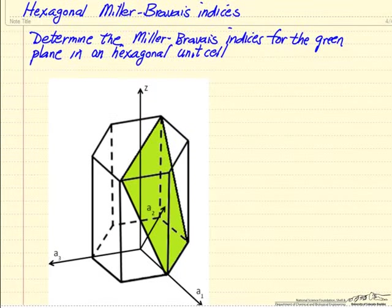In this example, we're going to look at how we determine the Miller indices when we have a hexagonal unit cell, and we use a different notation from a cubic cell.